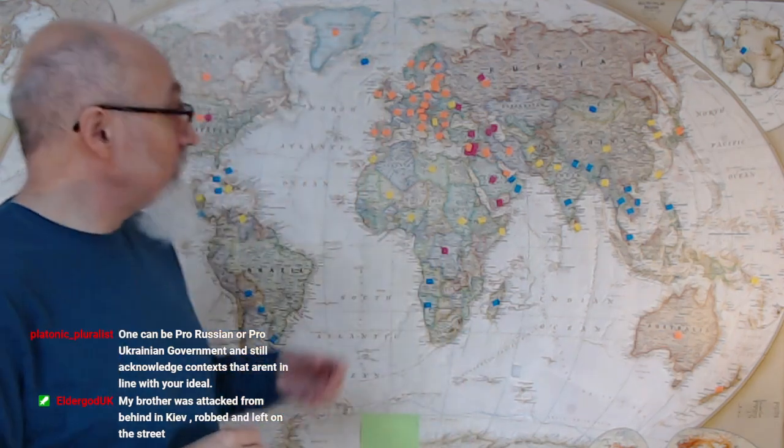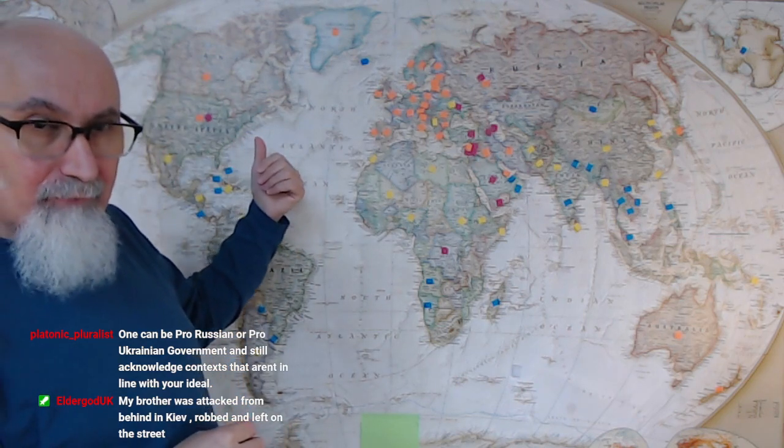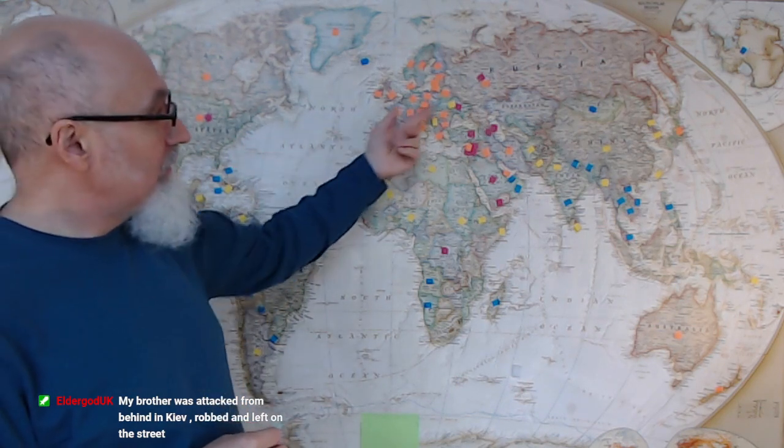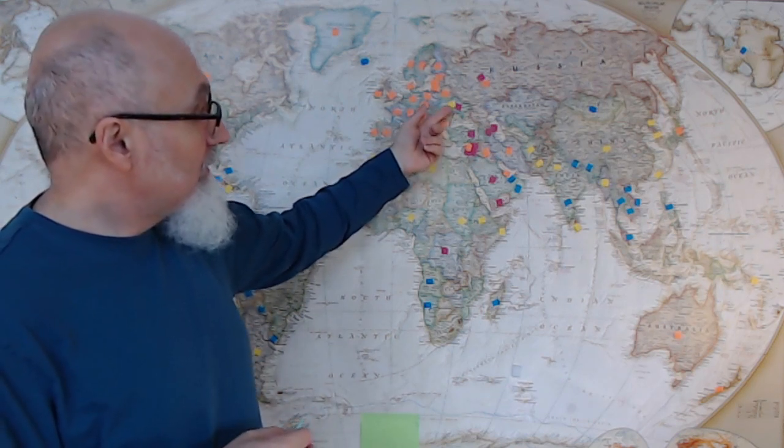That overthrew a democratically elected government that was installed by NATO, by Western powers, especially United States, right? With John McCain going there, handing out cookies with Chris Newland and stuff like this.